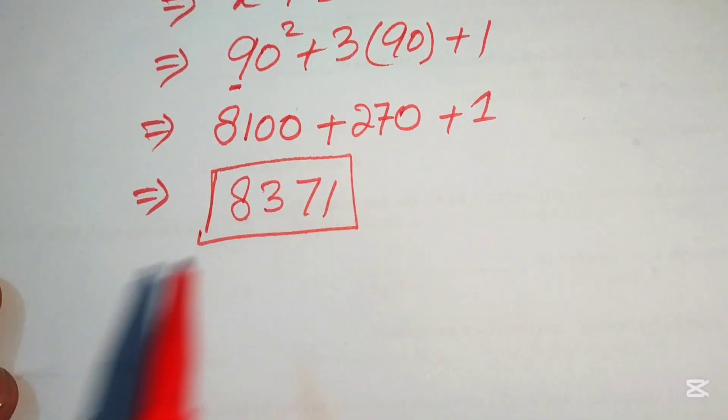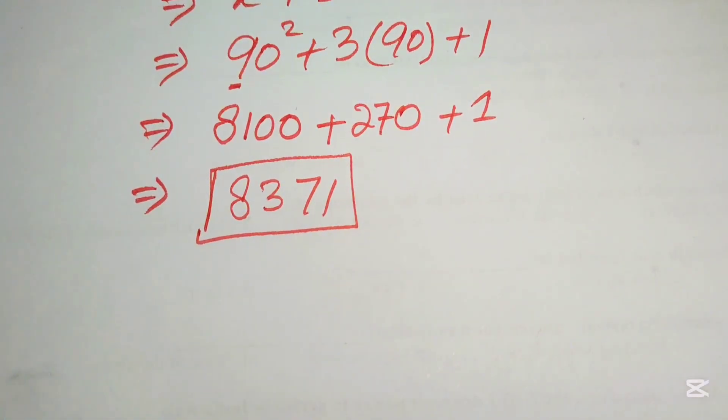So 8371 is the required simplified value of the given expression. Thank you so much for watching this video — please subscribe to my channel for more exciting videos.